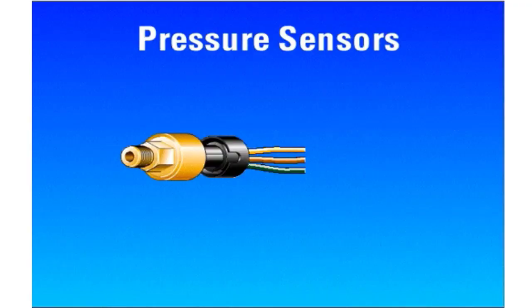A pressure sensor measures changes in pressure and sends a variable DC signal voltage back to the ECM. Pressure sensors have three wires. The first wire supplies voltage from the ECM to the sensor, providing power for sensor operation.